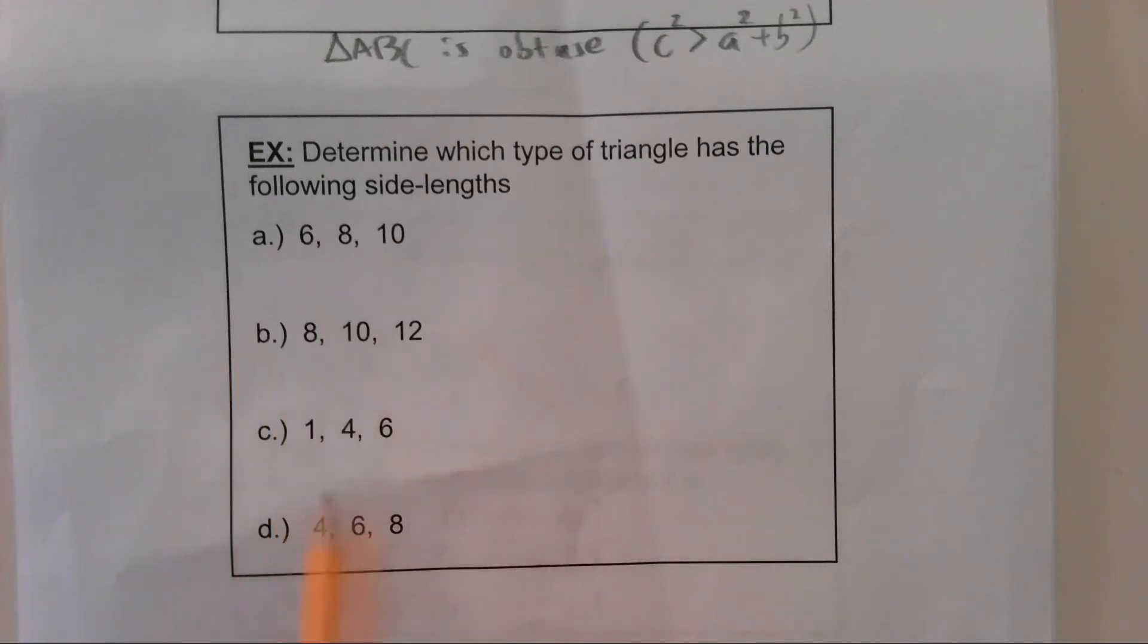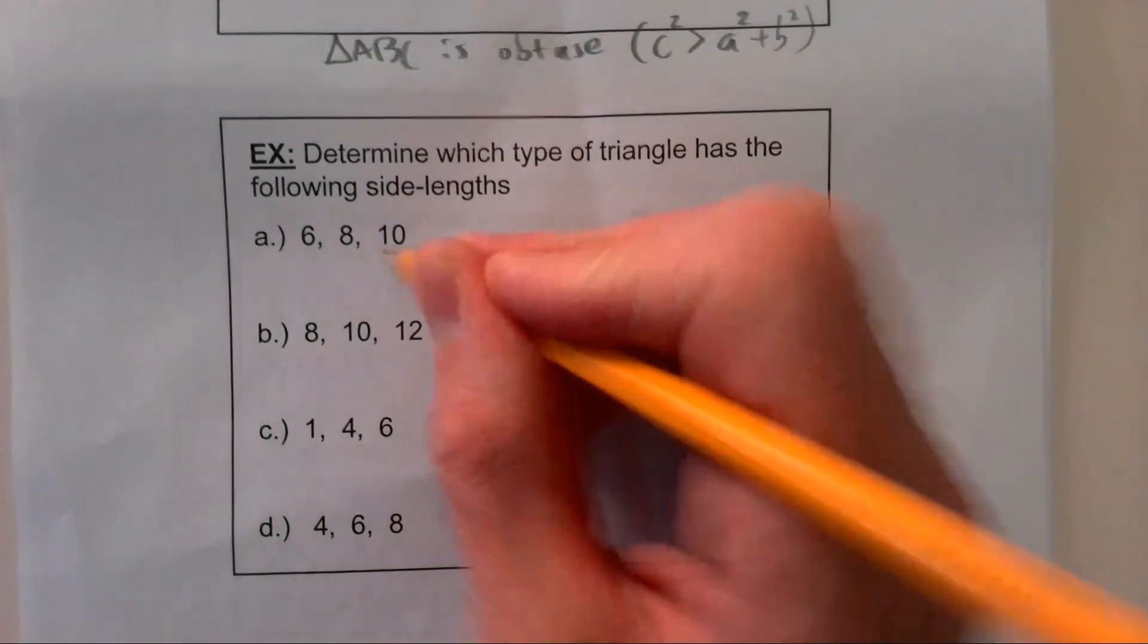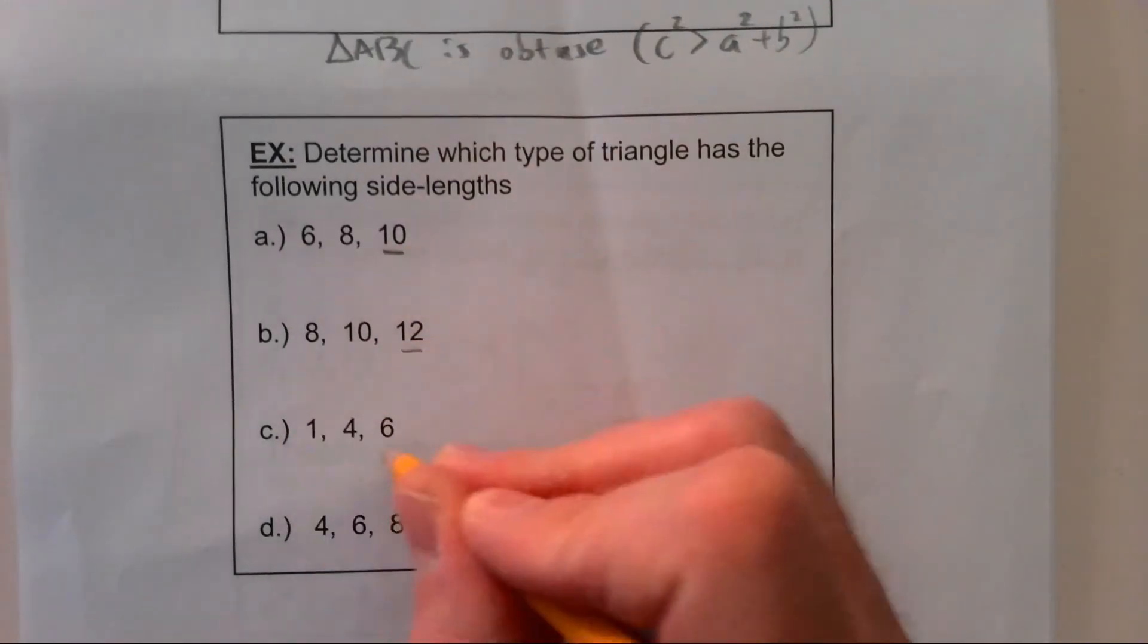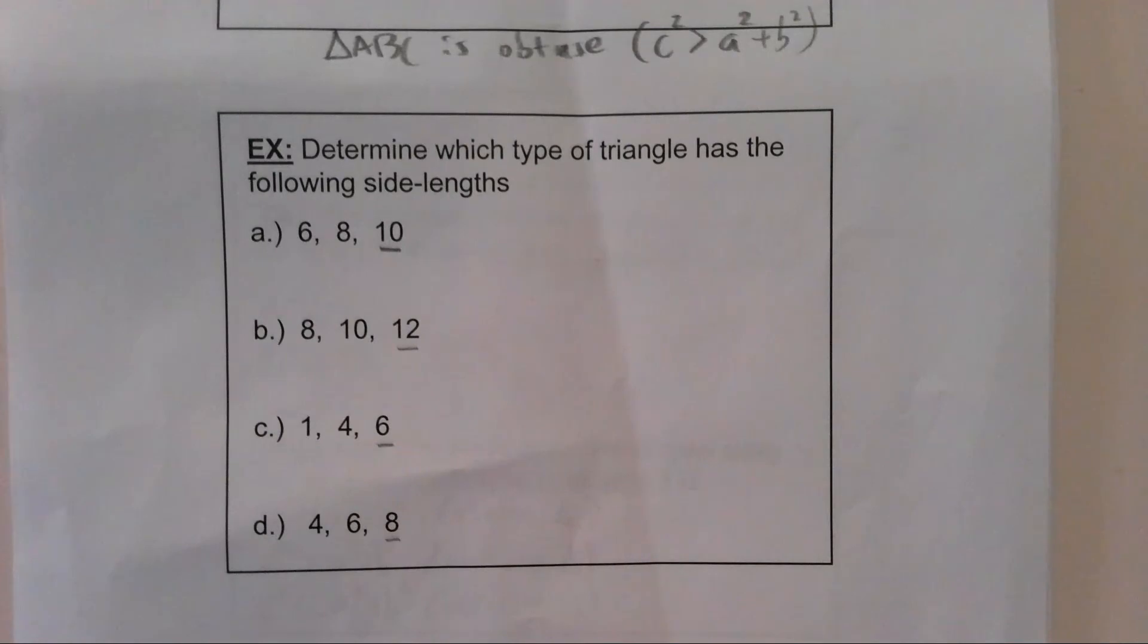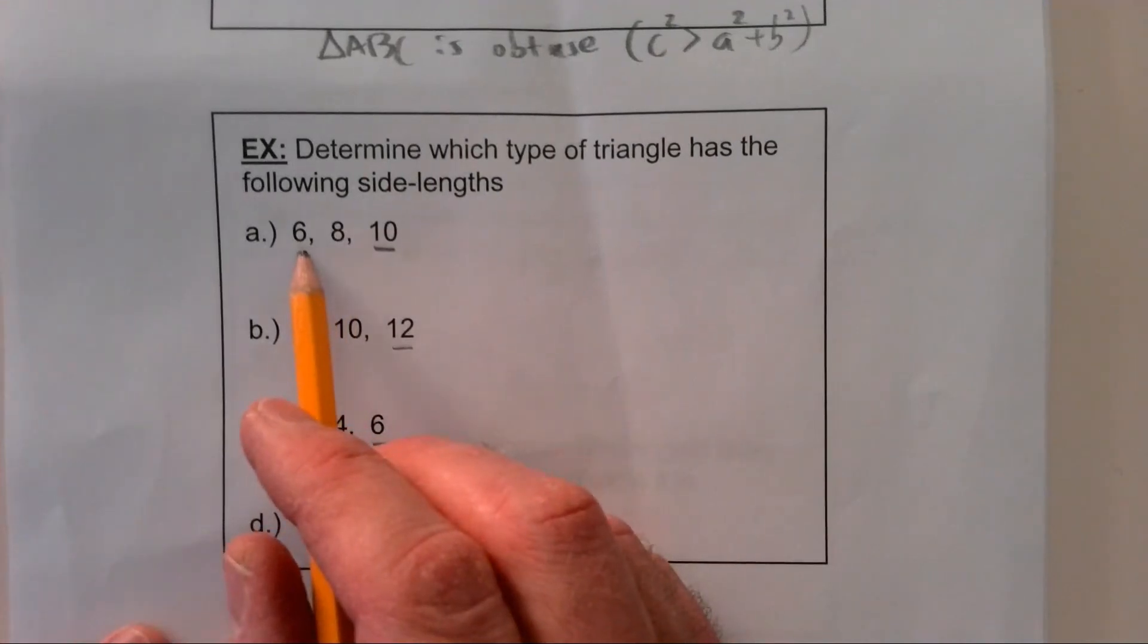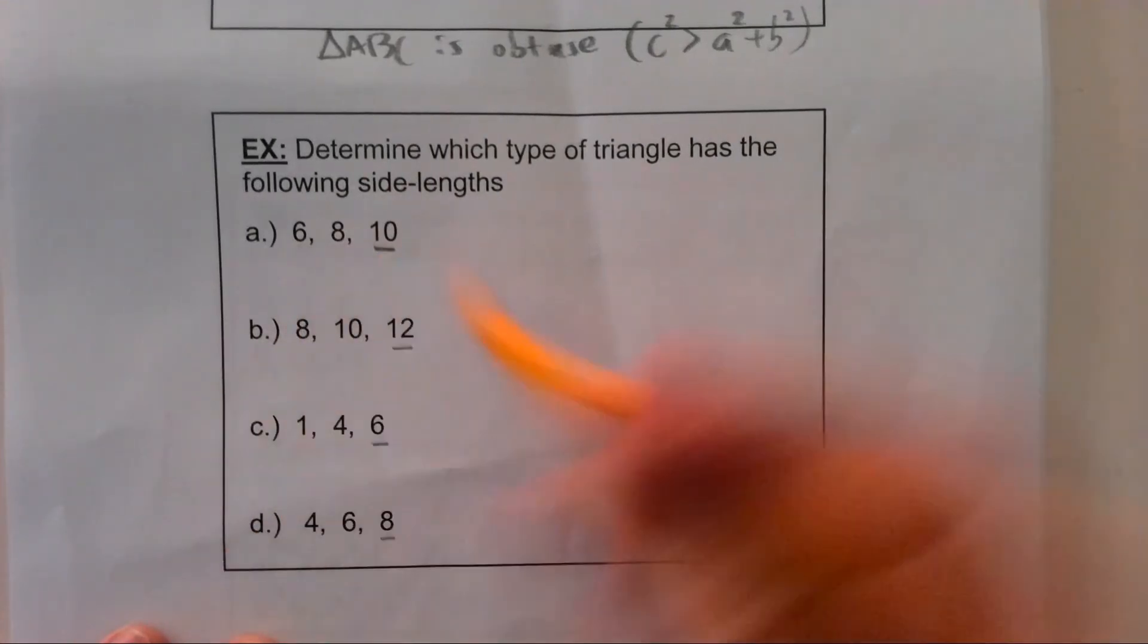So it's going to be pretty easy. I'm going to underline c for each of these. So that should be 10, 12, 6, and 8. So those are all the longest, or I should say the greatest values, or the longest sides of each potential triangle. So we're going to see: is this acute, right, or obtuse? So I'm going to square that thing. So c squared is 100.